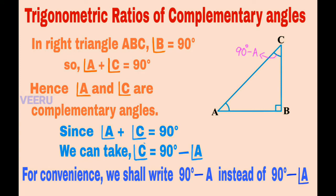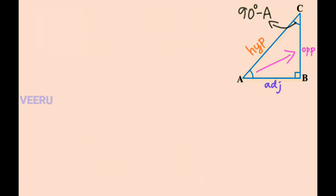For convenience, we shall write 90 degrees minus A instead of 90 degrees minus angle A. It means we can call angle C as 90 degrees minus A. With respect to angle A, BC is the opposite side, AB is the adjacent side, and AC is the hypotenuse. Now write six trigonometric ratios with respect to angle A.